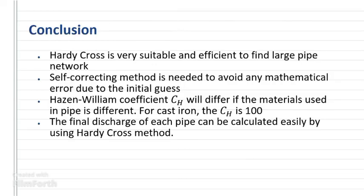In conclusion, Hardy-Cross is very suitable and efficient to find large pipe network. Self-correcting method is needed to avoid any mathematical error due to the initial guess. Hazen-William coefficient CH will differ if the materials used in pipe is different. For cast iron, the CH is 100. The final discharge of each pipe can be calculated easily by using Hardy-Cross method.